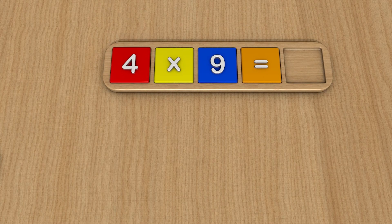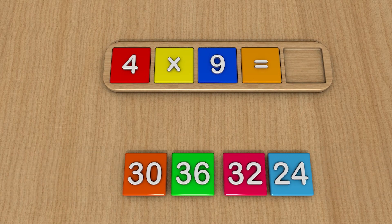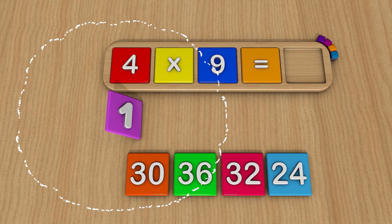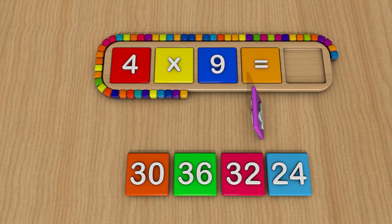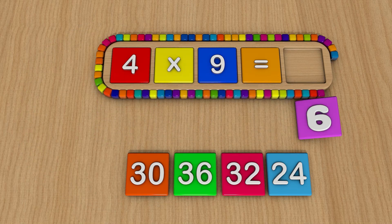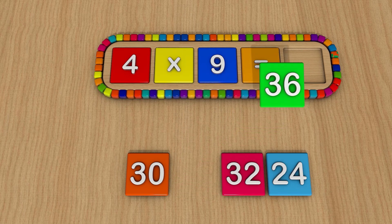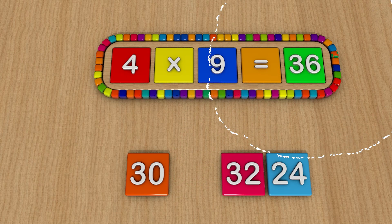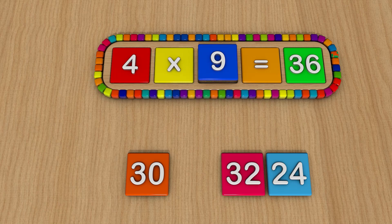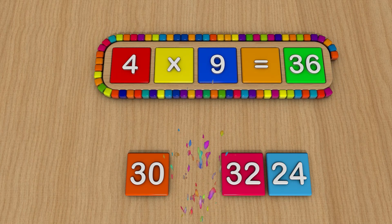8 times 4 equals 32. 8 times 4 equals 32.